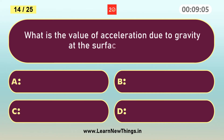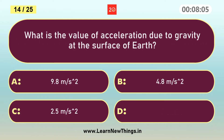What is the value of acceleration due to gravity at the surface of the earth? 9.8 meters per second squared.